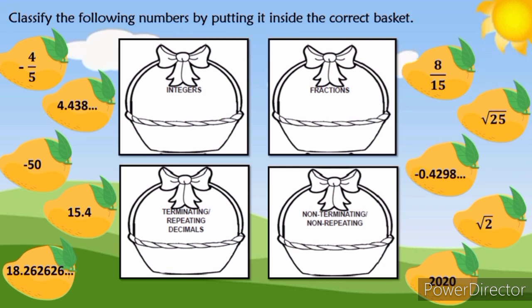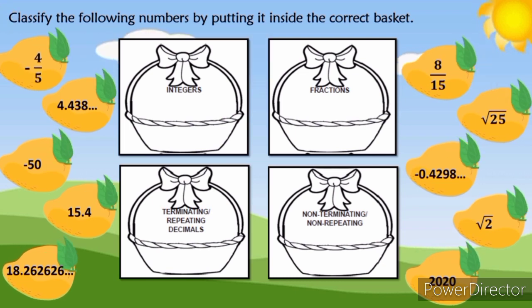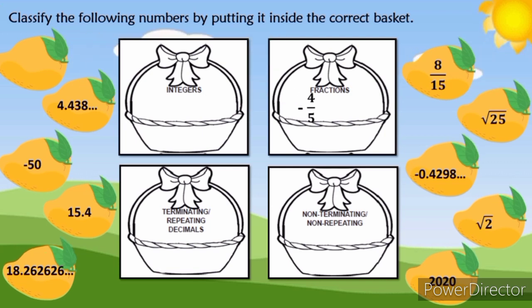Let's identify the following numbers. First, we have negative 4 over 5. Where do we need to place it? Correct, negative 4 over 5 is a fraction. How about 4.438 with three dots? Correct, that is non-terminating or non-repeating decimal. How about negative 50? Correct, that is integer.